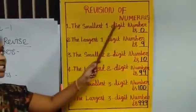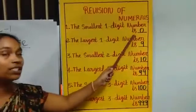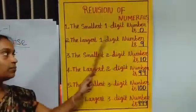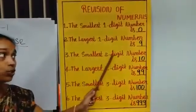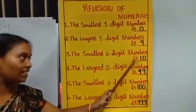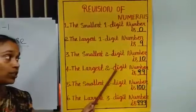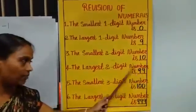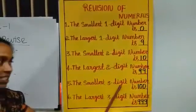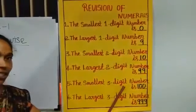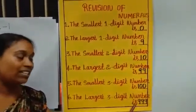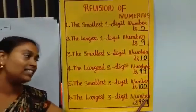Let's read one more time. The smallest 1-digit number is 0. The largest 1-digit number is 9. The smallest 2-digit number is 10. The largest 2-digit number is 99. The smallest 3-digit number is 100. The largest 3-digit number is 999.